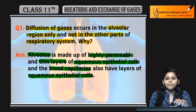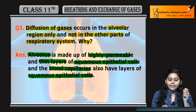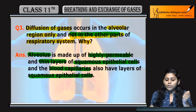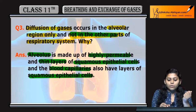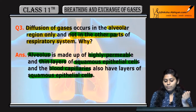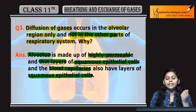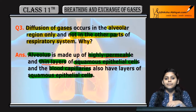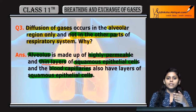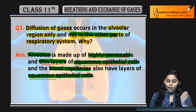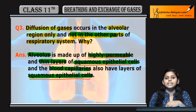Gaseous exchange occurs in the alveoli and not in other parts, because the alveoli are made of squamous epithelial cells which are highly permeable and thin. The blood capillaries through which the exchange takes place are also made of squamous epithelial cells.